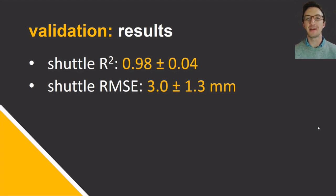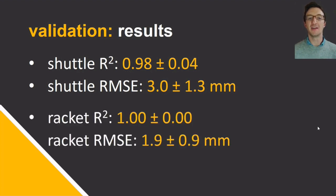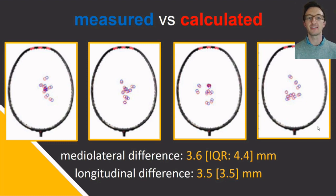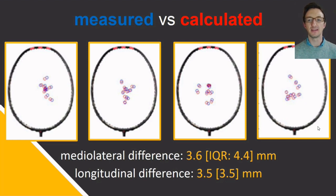Calculated impact locations in the longitudinal axis were offset proximally by the distance between the shuttle tip where the impression was left and the centre of the reflective tape tracked by the motion capture system, to allow a fair comparison. We saw a good fit of the pre- and post-impact shuttle curves to experimental data, with a root mean squared error of three millimetres on average, and the racket curves performed even better. Measured versus calculated impact locations for the 40 trials mapped on top of each other well, with average differences of around three and a half millimetres in both directions.